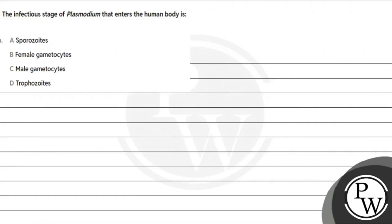Hello, let's read the question here. The question says: the infectious stage of Plasmodium that enters the human body — what is the name? The options are: Sporozoite, Female Gametocyte, Male Gametocyte, or Trophozoite.